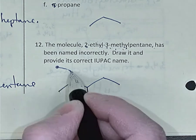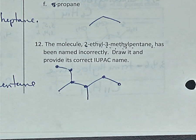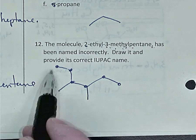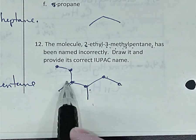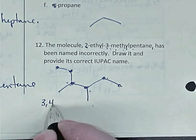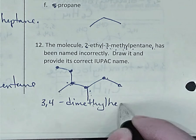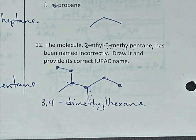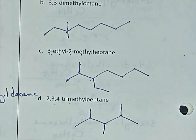The longest continuous chain is actually 1, 2, 3, 4, 5, 6 — it's not pentane, it's actually a hexane. Numbering from either end: 1, 2, 3, 4 — carbons 3 and 4 have methyl branches. If we number from the other side, 1, 2, 3, and 4, we get the same name. So this is 3,4-dimethylhexane — six carbons is the parent chain. That's a little trick: they give you the incorrect name, you draw it, and then figure out what the correct name should be. Drawing molecules is a little easier than figuring out their names.